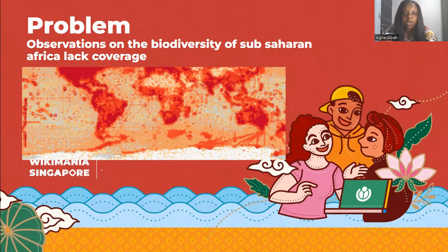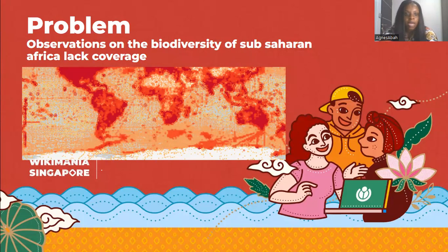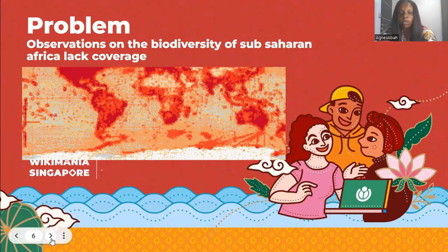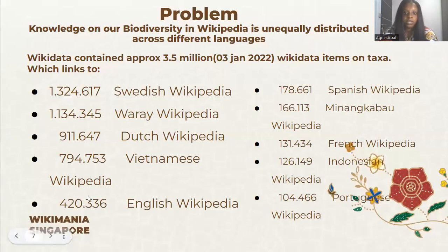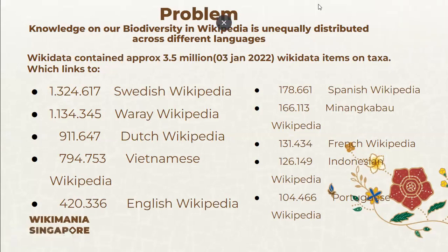We have a representation map. If you look at African representation carefully, you can see the dotted red parts on the map. Compared to other continents, there are far more observations elsewhere, while Africa is more scanty. So we are trying to do more observations to get more representation on Wikipedia and other Wikimedia projects. The knowledge on biodiversity in Wikipedia is unequally distributed across different languages.